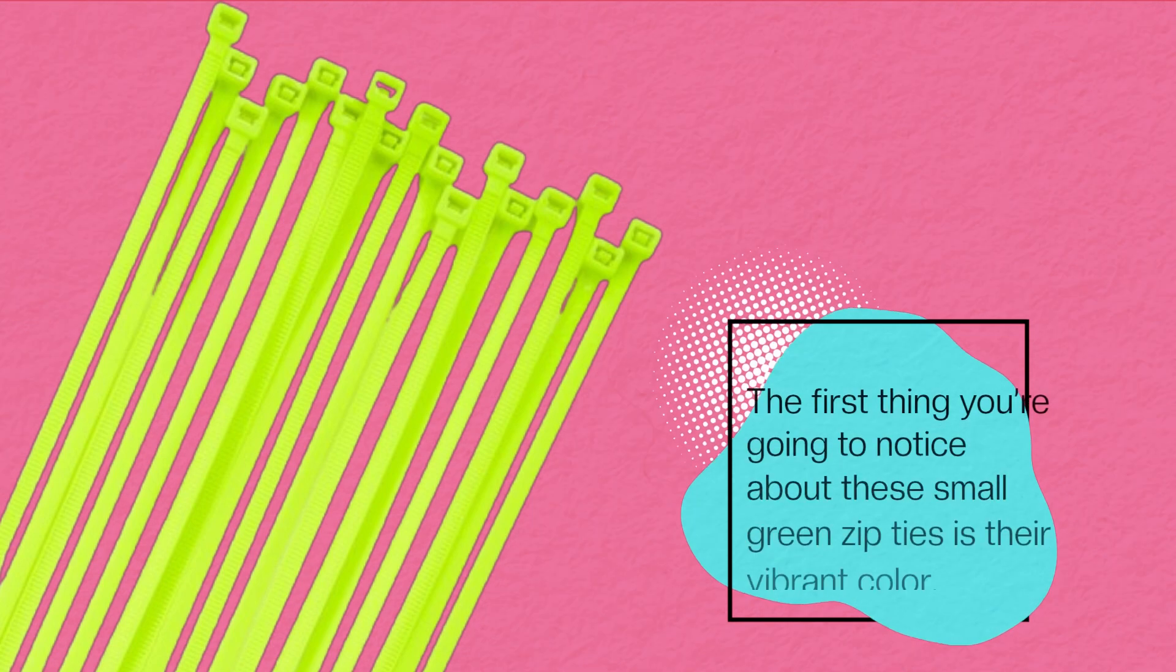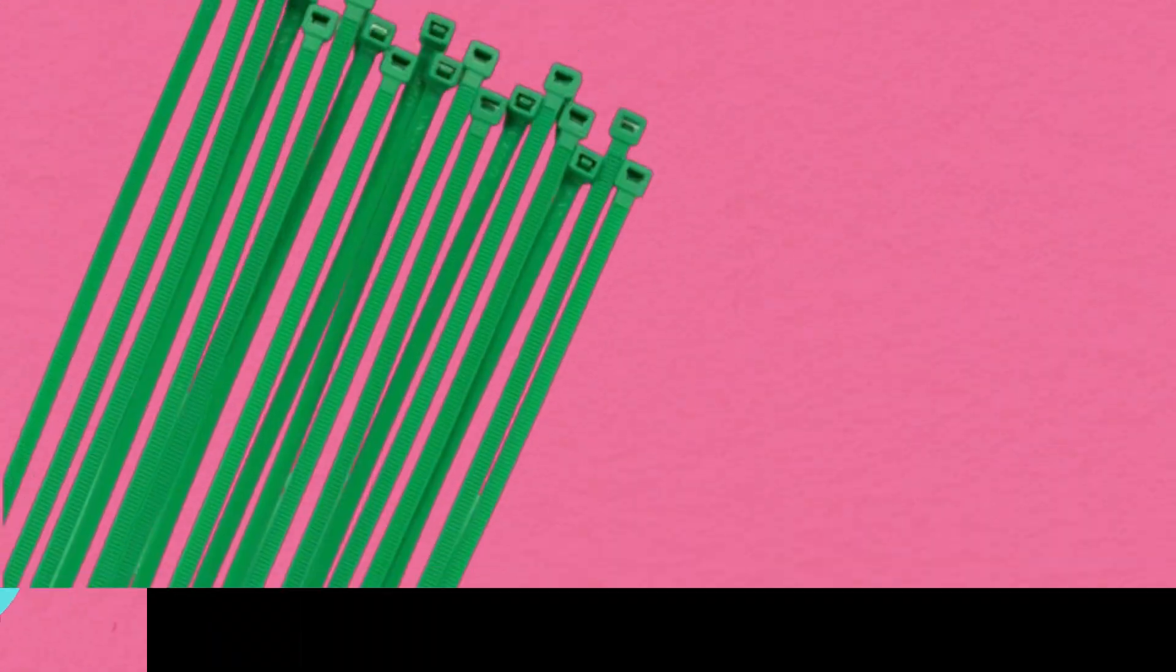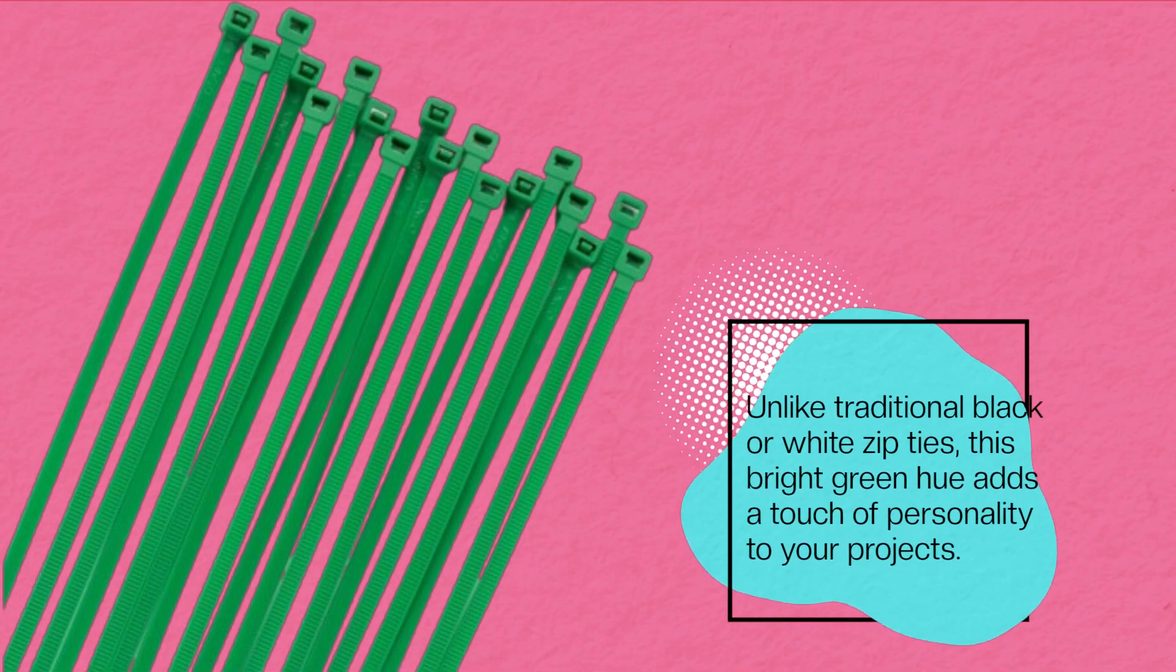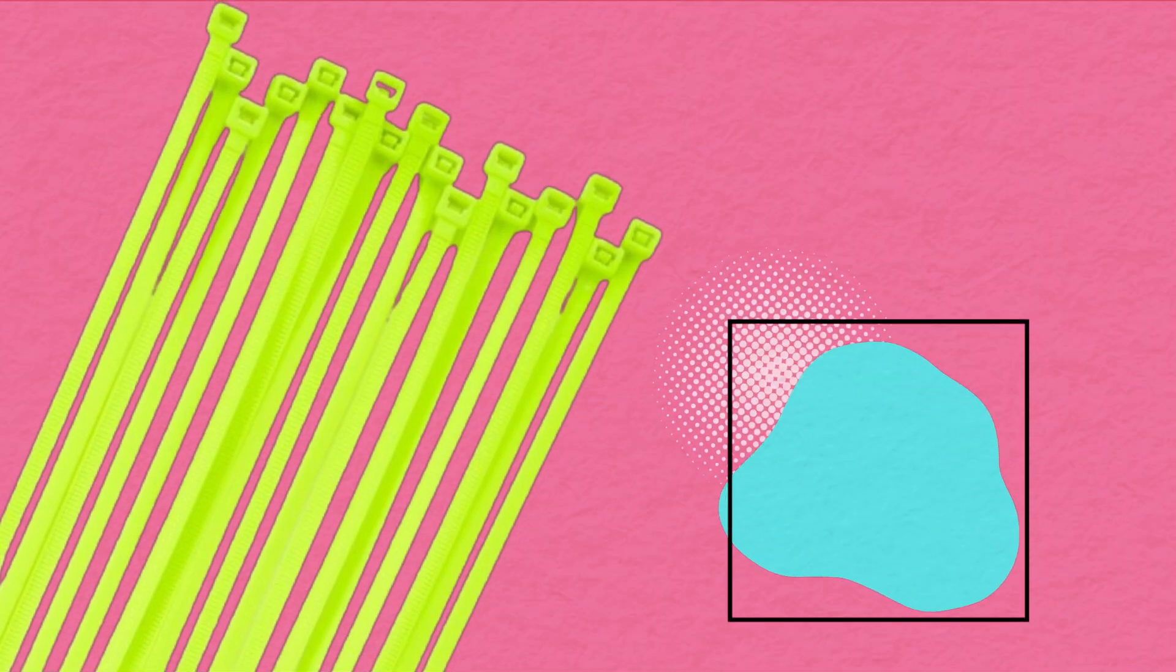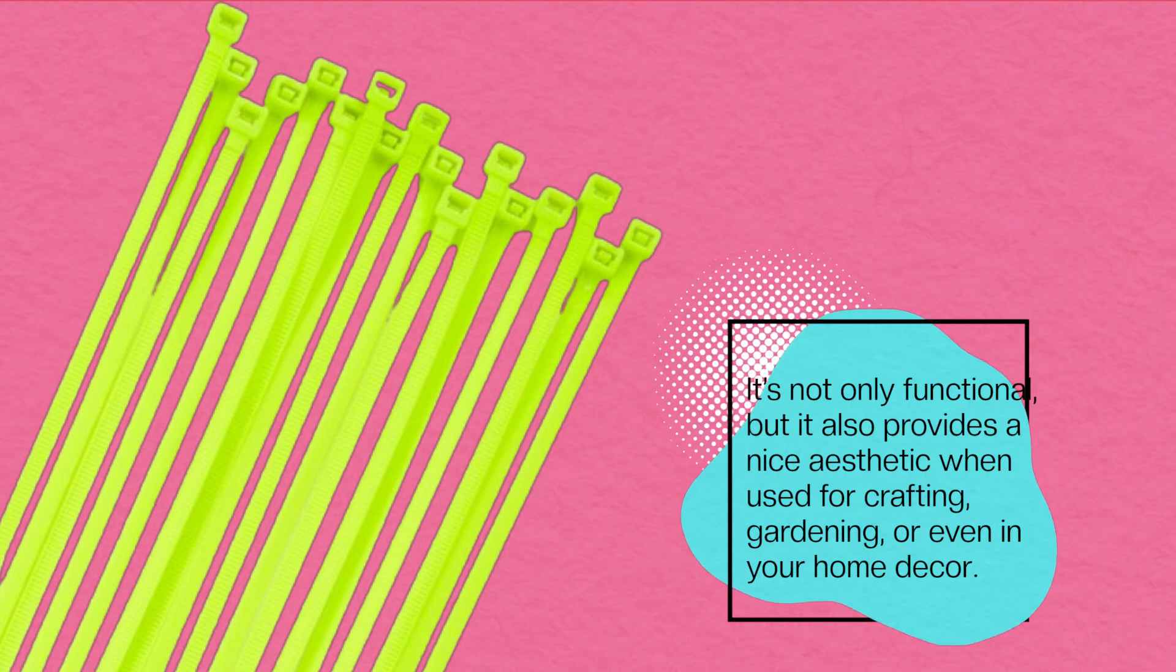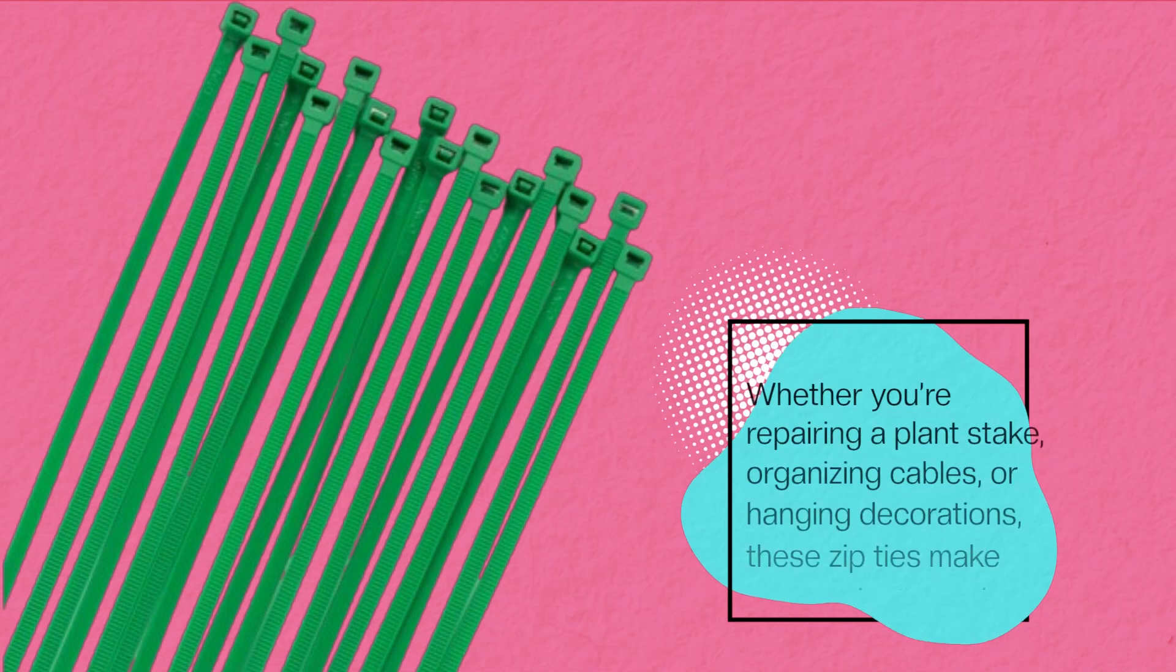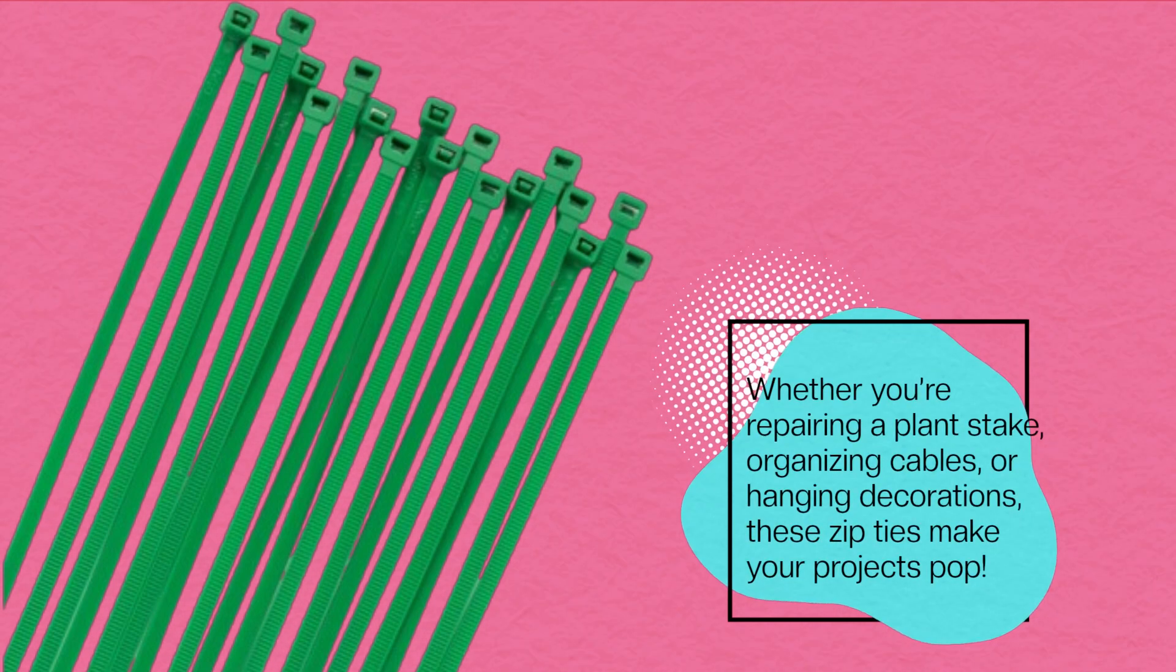The first thing you're going to notice about these small green zip ties is their vibrant color. Unlike traditional black or white zip ties, this bright green hue adds a touch of personality to your projects. It's not only functional, but it also provides a nice aesthetic when used for crafting, gardening, or even in your home decor. Whether you're repairing a plant stake, organizing cables, or hanging decorations, these zip ties make your projects pop.